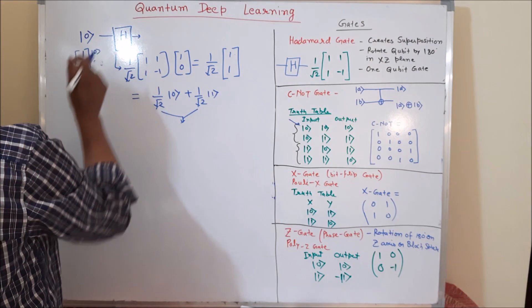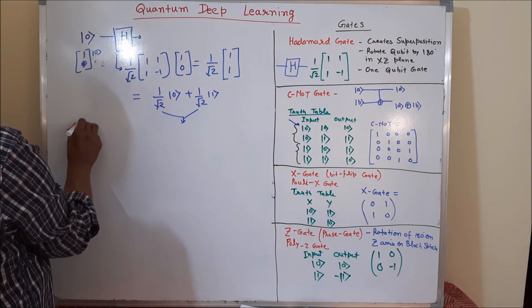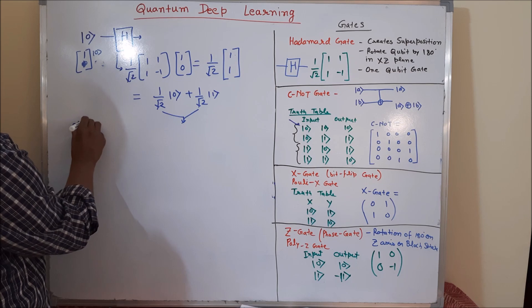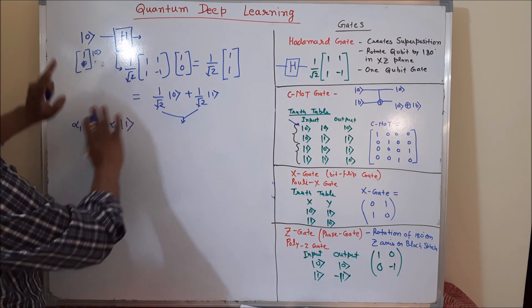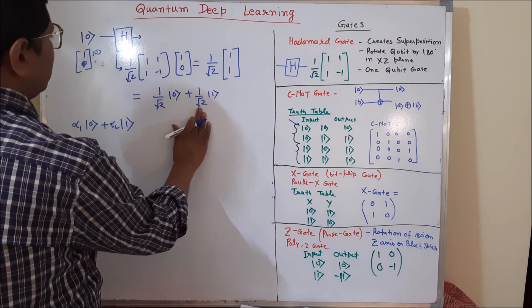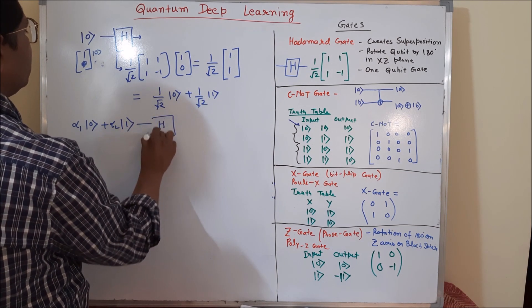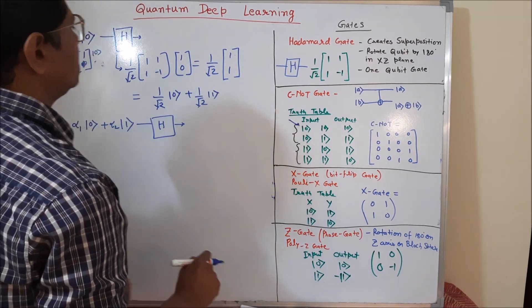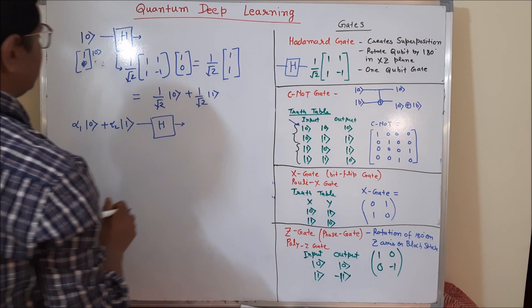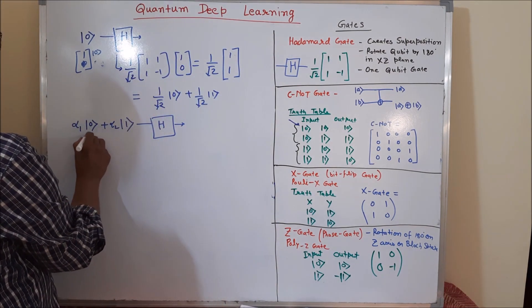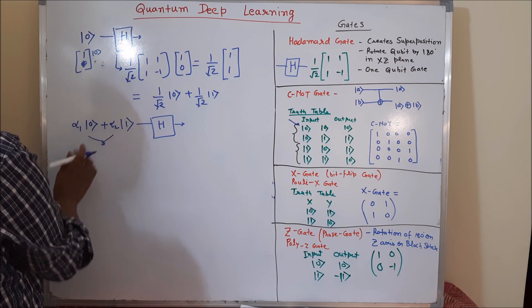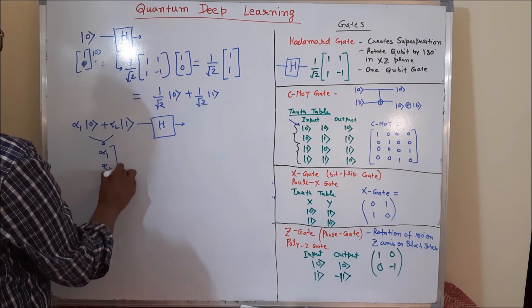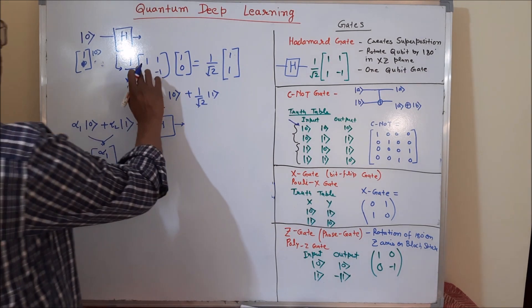You may ask: instead of one basis state, if we pass something which is already in superposition state, like α₁|0⟩ + α₂|1⟩ — suppose this is already in superposition state and we pass it through the Hadamard gate — what will happen? Surprisingly, it will generate another superposition output, but different in nature. To understand this, we will identify the state vector. In an earlier tutorial I explained how to calculate the state vector, so I am directly using that information.